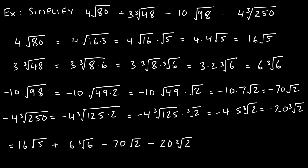Here's a slightly more involved problem using the same principles. Before starting, take inventory: this term is a square root, this one is a cube root, square root, cube root. Even if two terms have the same radicand, if their indices differ they are not like terms and cannot be combined. We simplify each term individually and then combine results.